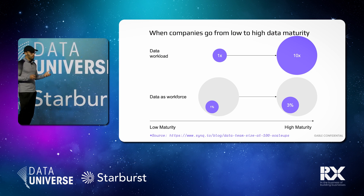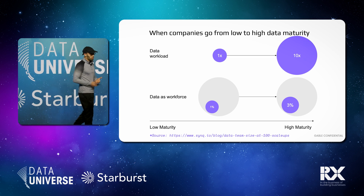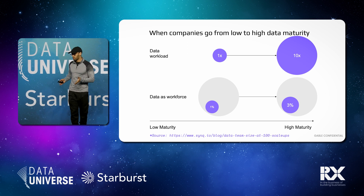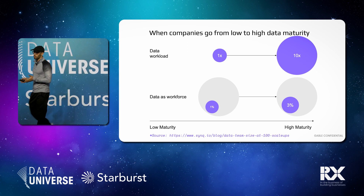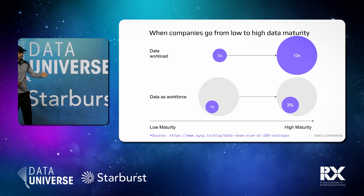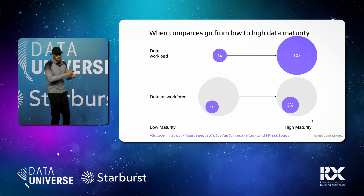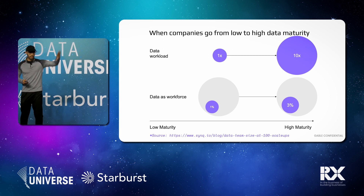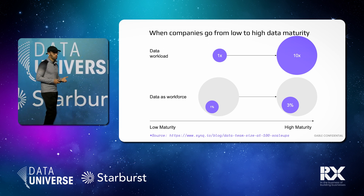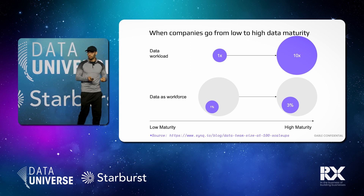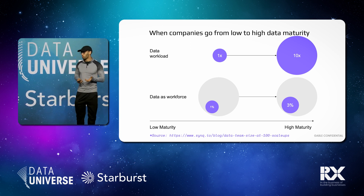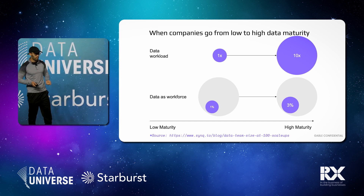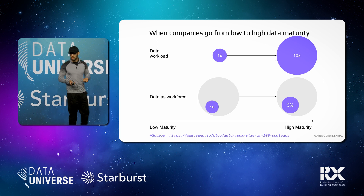A lot of people imagine that as their use cases for data grow, it's pretty easy to add more resourcing to their existing data team to keep up with the demand, but it actually does not scale linearly. Because the complexity increases exponentially over time, the cost to manage the data rises at a rate that outpaces any possible resourcing. You quickly get into a situation where your data team is constantly underwater. Data engineering is constantly building new pipelines, addressing outages, and that's really all they're doing instead of truly innovating.